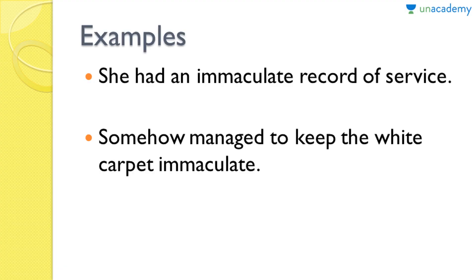Let's look at the examples. 'She had an immaculate record of service' — she has a very clean, crystal clear record of service. 'Somehow managed to keep the white carpet immaculate.' Usually white carpets go dirty and it's very hard to maintain something as pure as white. If you're wearing a white dress, it's hard to retain its color as it fades. So in order to maintain its immaculate shine, it's hard — that is what is meant here: somehow they managed to keep the white carpet perfectly clean.